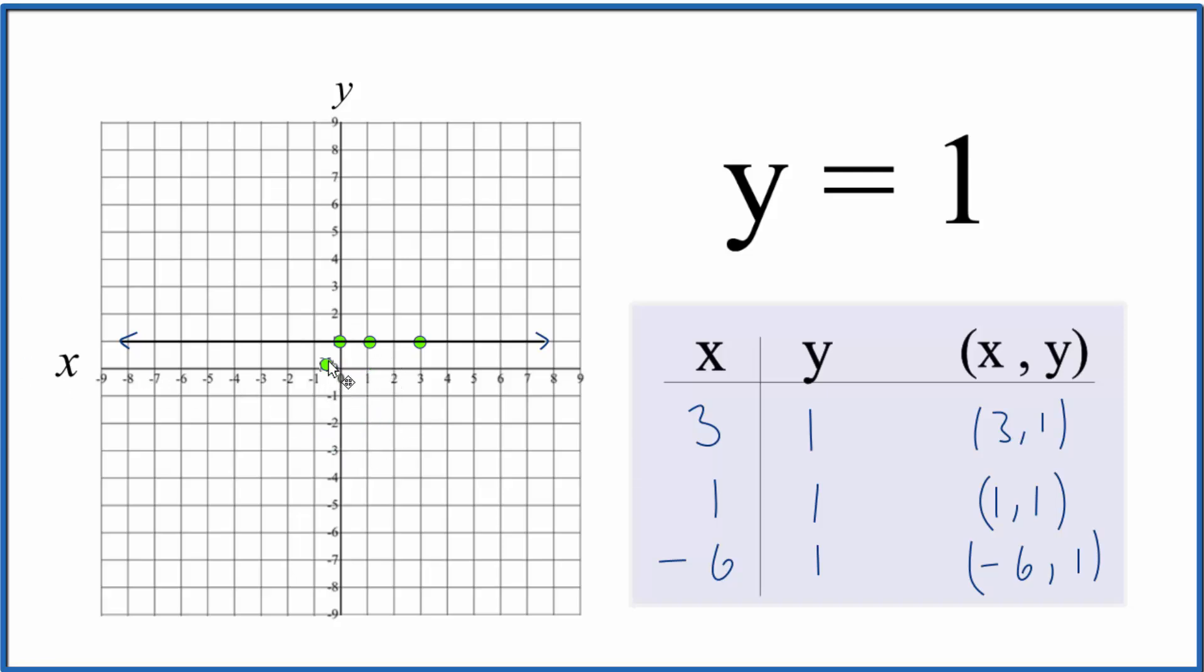And finally, we have x = -6 and y = 1. So again, they all fall on the graph. We have a slope of 0, and we intersect the y-axis at 1.